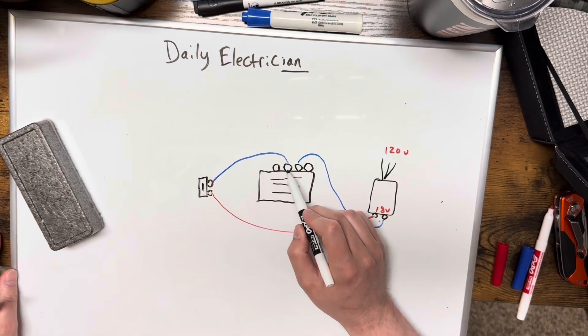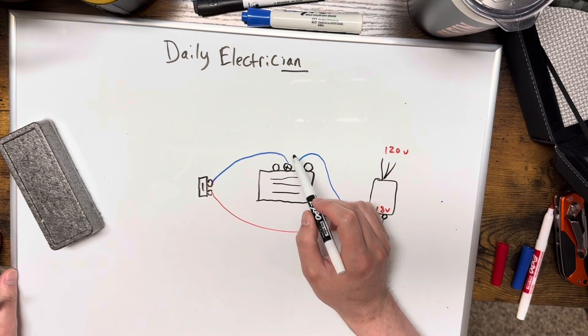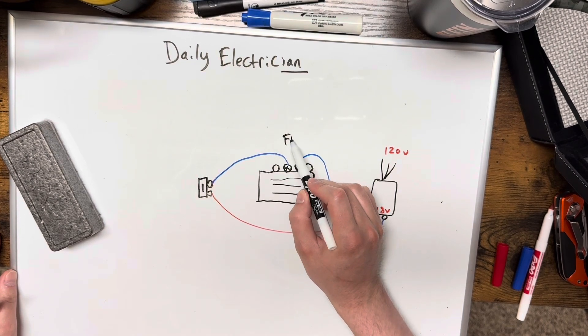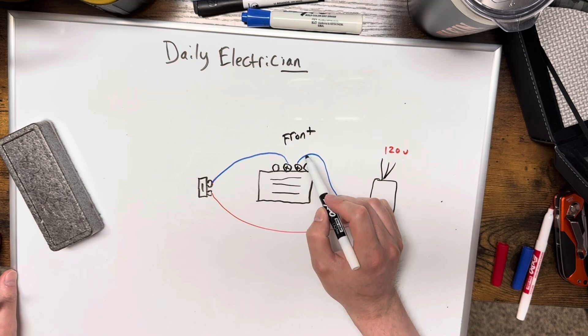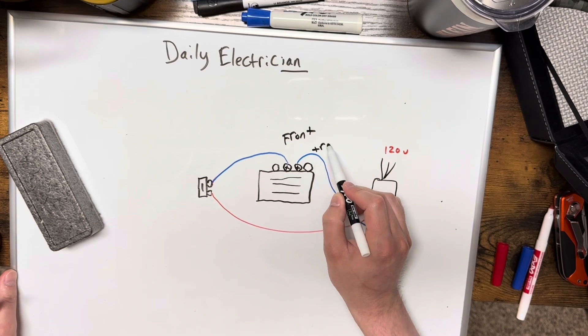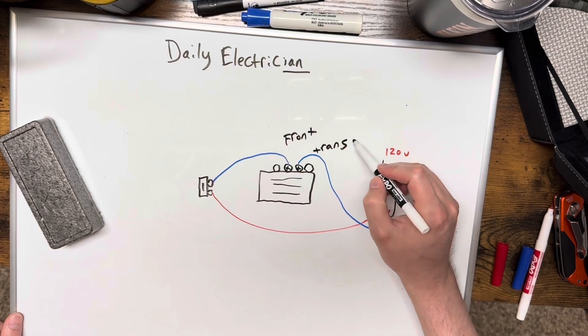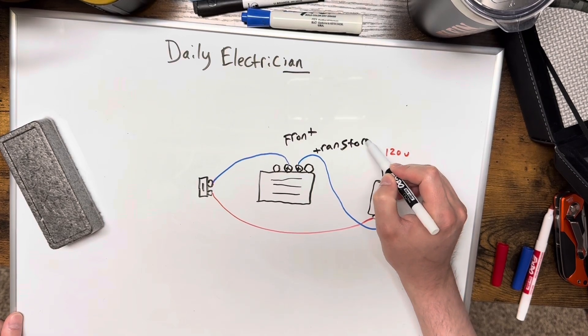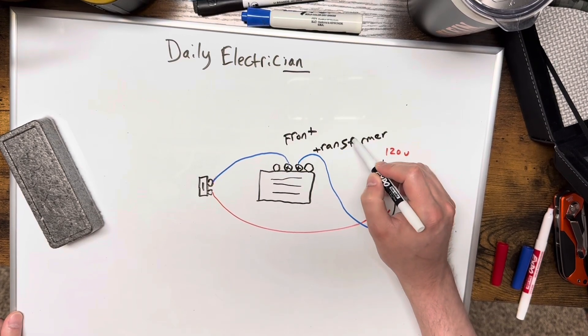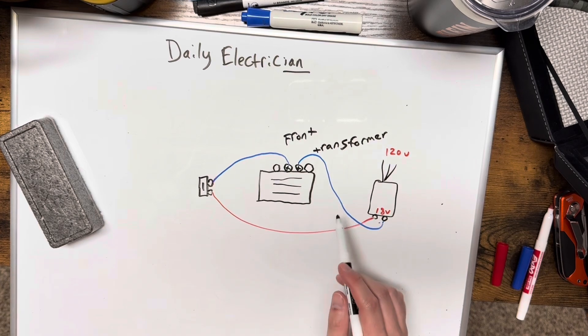One of them is going to go to a connection point and one of those is going to be called front and the second one is going to be called the transformer or trans or whatever it's called. So one's going to go to the transformer and one's going to go to the front.